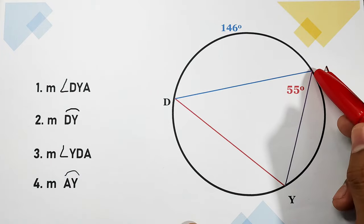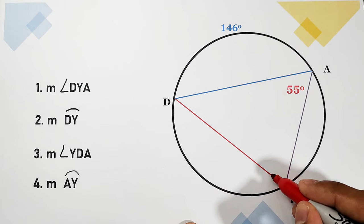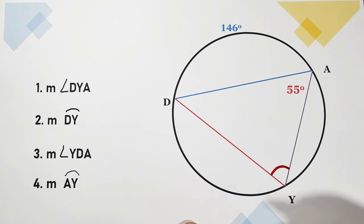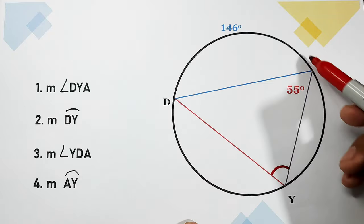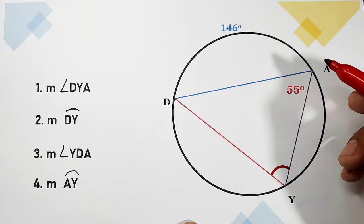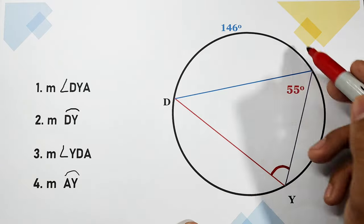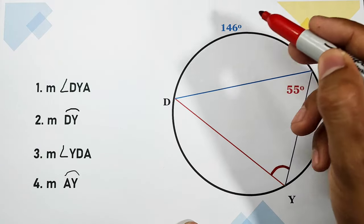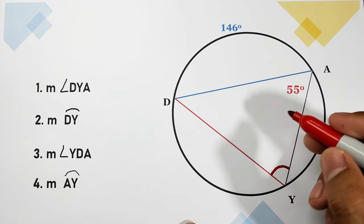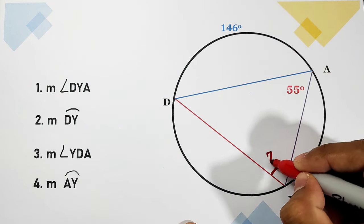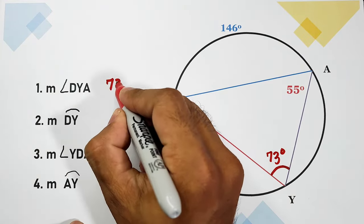Arc DA is 146 degrees. For number one, angle DYA is the inscribed angle and the intercepted arc is arc DA, which is 146 degrees. Since the inscribed angle is one half of the arc, one half of 146 is equal to 73 degrees.